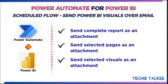Senior managers would want a daily status report to track the progress and take appropriate actions whenever required. They would expect a daily email with an attachment containing the progress. This scheduled task can be easily performed by using Power Automate by connecting to Power BI service. In this video I'll walk you through the steps to schedule an automated email containing an attachment on the status from Power BI service.